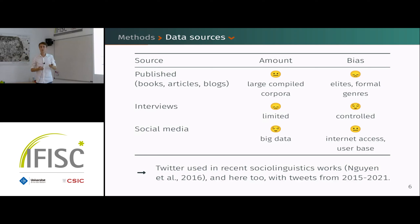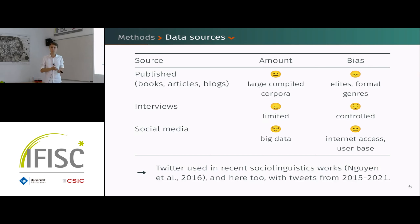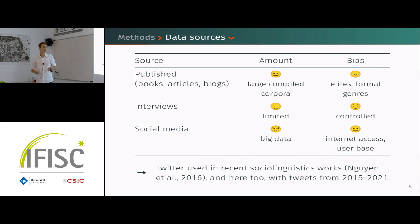Another option, favored by linguists, is to do interviews, because in this case you control completely the bias in the data. If you do things correctly and sample the right people, you shouldn't have any bias and you should observe exactly what you want. However, this is very costly, hence the very limited amount of data available from this approach.